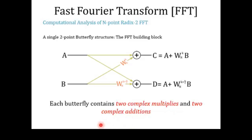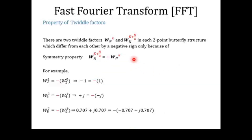We are now going to develop an optimized implementation of a single two-point butterfly structure that produces the same output values C and D with fewer computations. To do this, we will use the symmetry property of twiddle factors. In each single two-point butterfly operation we have two twiddle factors: WNK as the first and WNK+N/2 as the second.